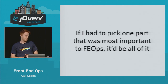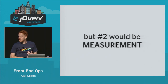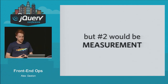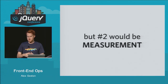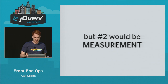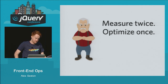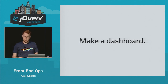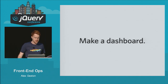If I had to pick the most important part of front-end ops, it would be all of it — but number two would be measurement. Once you understand the measurements you're taking, it's pretty simple to devise plans. The difference in data is more interesting than the data itself — the delta, the change, is what you're looking for. Make a dashboard, and always have this data in front of you so you notice when things change.